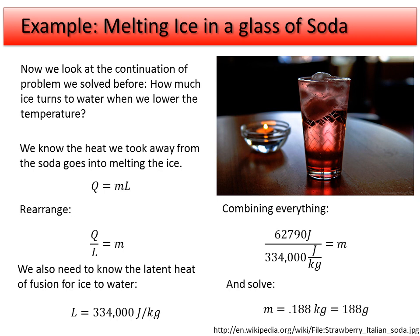Again, this is not the full way to solve this problem, but just to get an idea of how much ice would melt if we were to lower the temperature. It's kind of an easy problem to solve. We just used the heat of fusion because we went through a phase change from solid to liquid. There was no temperature change of the ice or the ice water, but that energy had to go from the soda into it. So we took the energy released from the soda and converted that into the energy to melt the ice.